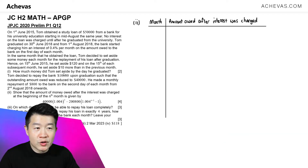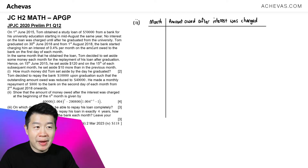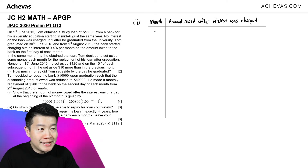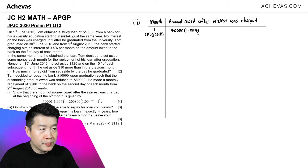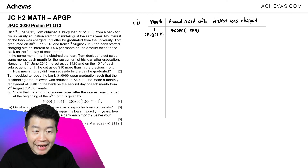Upon graduation, Tom is going to be paying back $10,000, which makes the amount of money that he owes the bank $40,000. On the 1st of August, the bank is going to start charging an interest of 0.4%. This means that during that very first month — August 2018 — after the interest is charged, Tom will be owing $40,000 multiplied by 1.004. On the 2nd of August, Tom is going to be paying back $800.